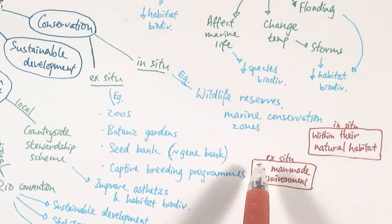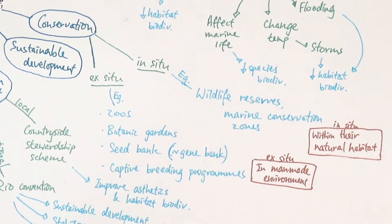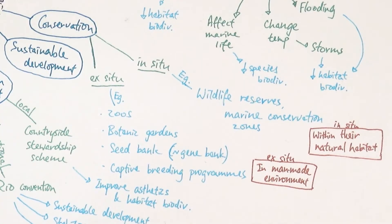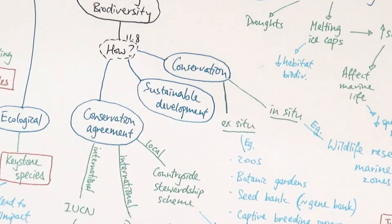Ex-situ — 'ex' meaning outside — refers to conservation in a man-made environment outside the natural habitat. Classic examples include zoos, botanical gardens, seed banks (similar to gene banks), and captive breeding programs. These are particularly relevant for preserving animals or organisms that are endangered or very rare.